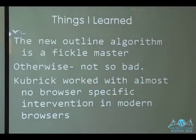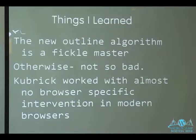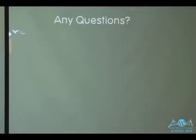Things I learned: the new outline algorithm is a fickle master — some weird things came out, but that's why I'm doing this now, to learn going forward. Kubrick actually worked with almost no browser-specific intervention in modern browsers; it just ported over. IE6 and IE7 have a slightly bigger H1 inside the article element, so I'd have to target that.